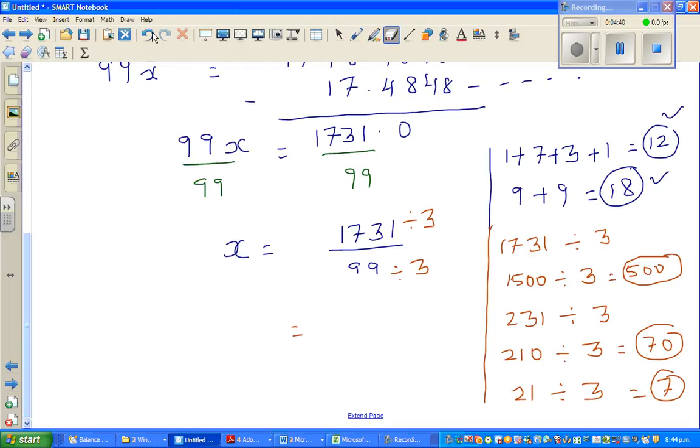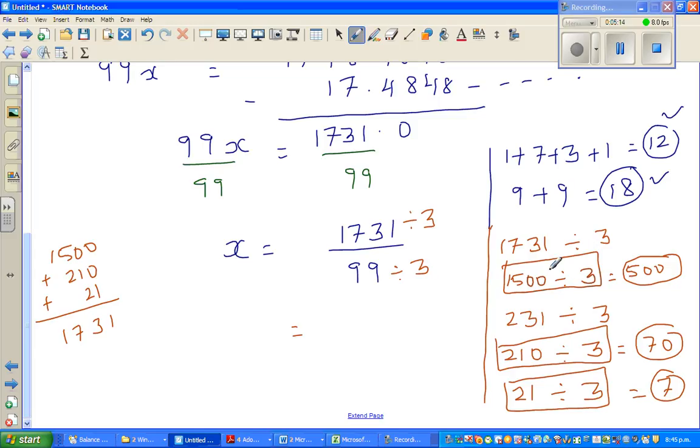Let me use a smaller eraser. So this is nothing but 500. So I hope you understood. This is 500 divided by 3. And then you've got 210 divided by 3. And then you've got 21 divided by 3. So just to explain, so this is 1500 plus 210 plus 21. So this is 1, this is 3. So it's 1731. So what I've done is I split this into neat numbers by which you can divide. You can also use the long division method, which is 577 over 33.